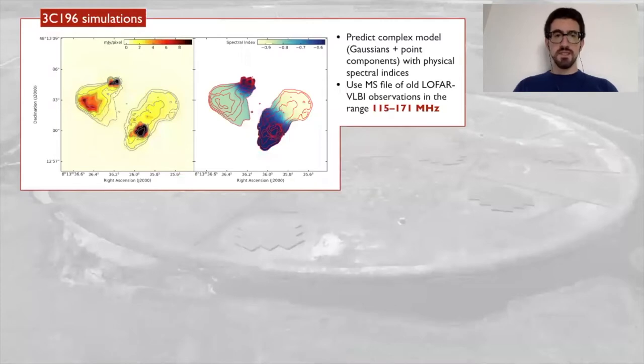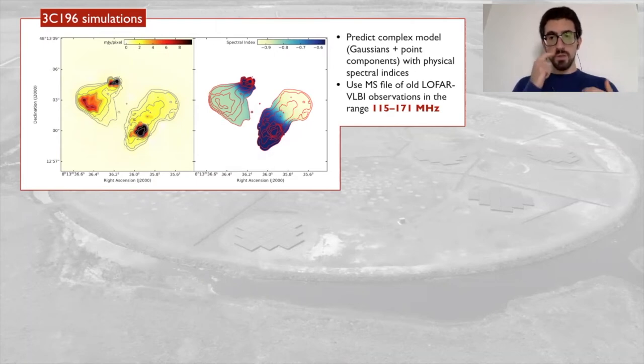To test this method we apply it to simulations of 3C196. In this case we have a spectral index map in the beginning and we use this spectral information to generate a model which is then predicted into an MS file.